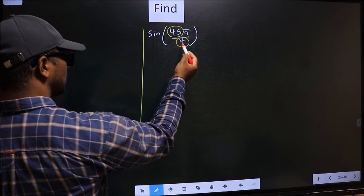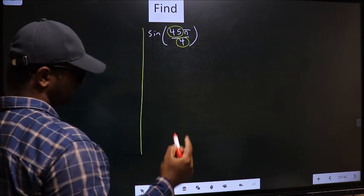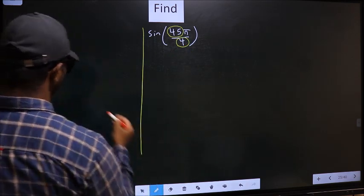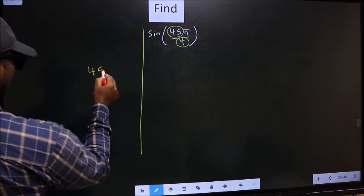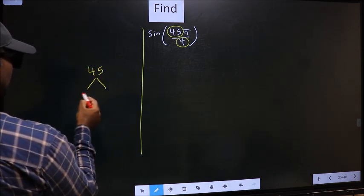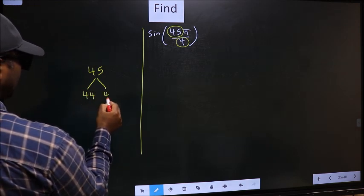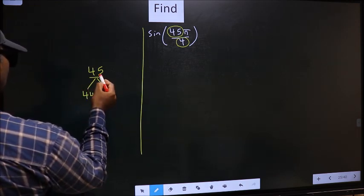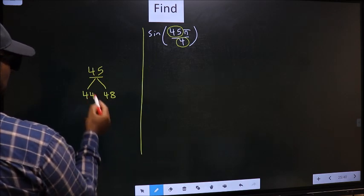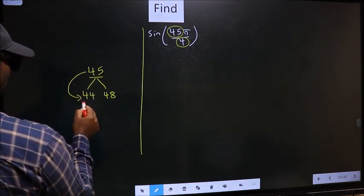What I mean is, 45 and here you write multiples of 4: 44 and 48. Now, 45 is close to which multiple? This is close to 44.